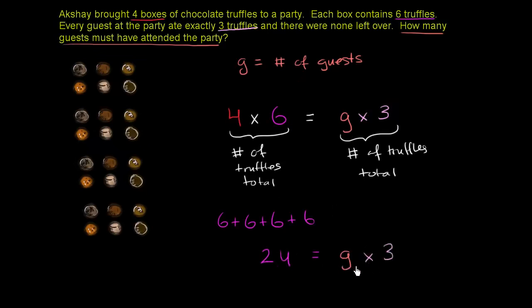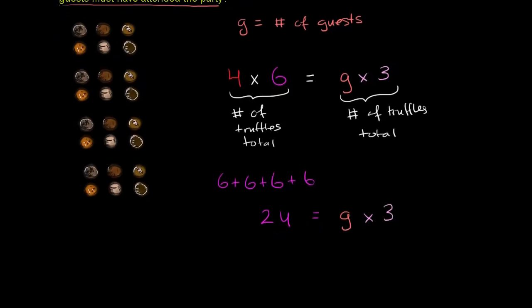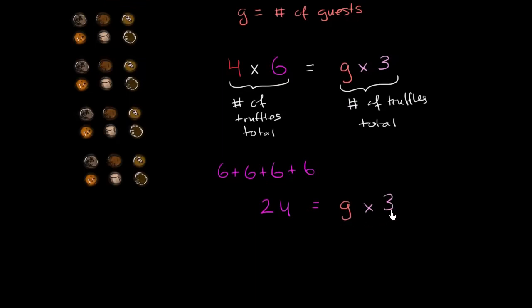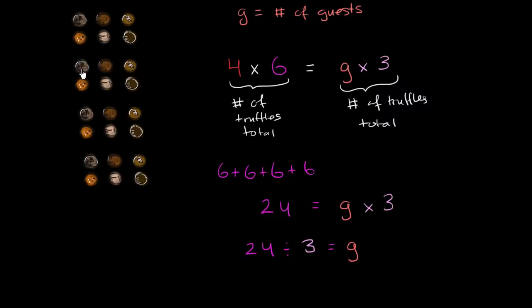So what times three is equal to 24? If G times 3 equals 24, that means 24 divided by 3 must equal G. One way to think about it: if I divide these 24 truffles into groups of three — three for each guest — the number of groups will tell me the number of guests.